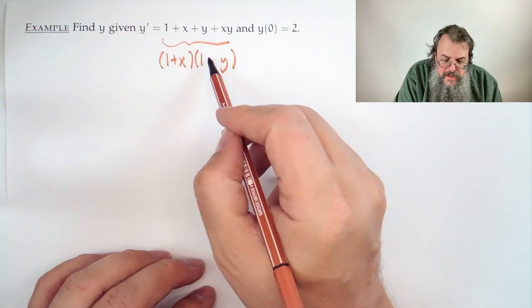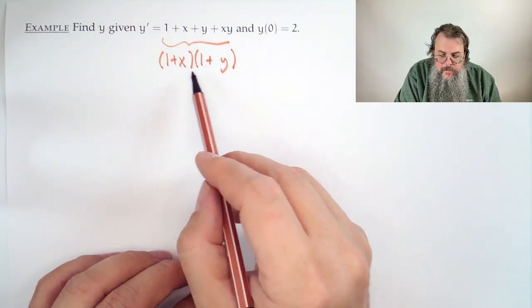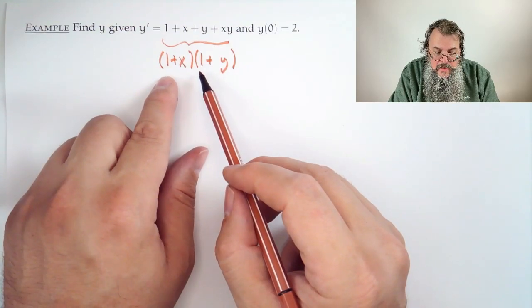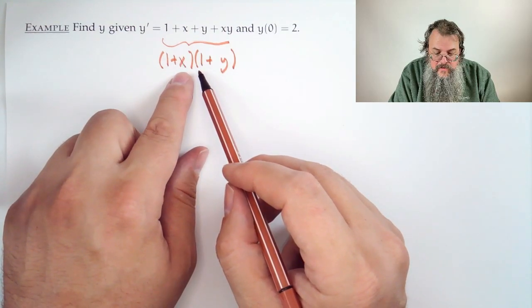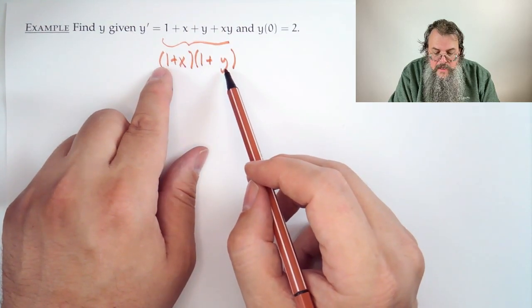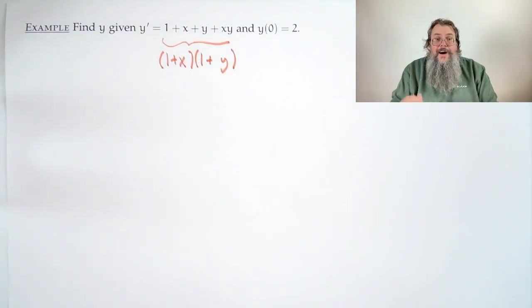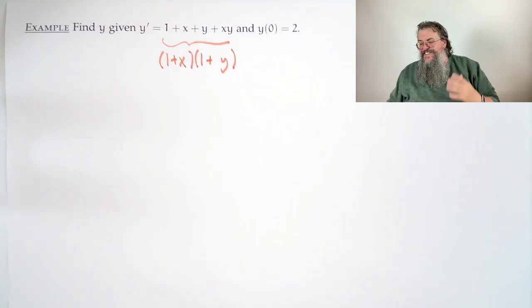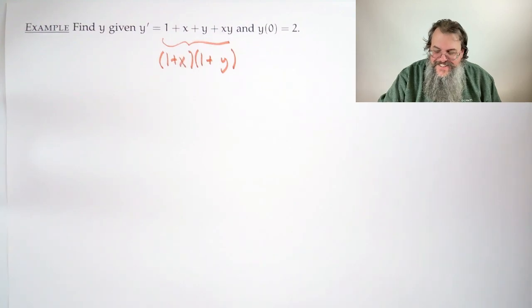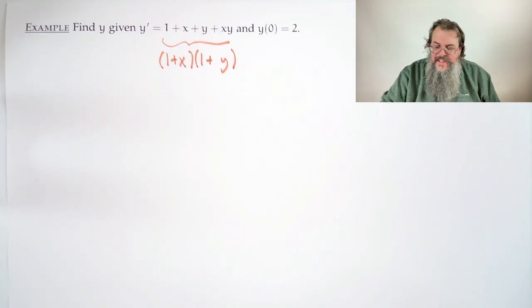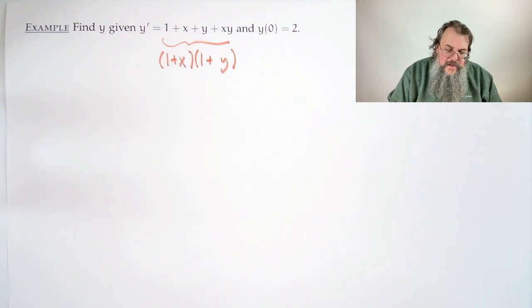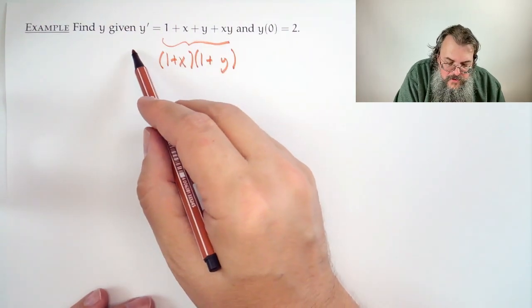And I say, well, what about something like this? (1 plus x)(1 plus y). Well, does it work? You get one, and then there's x, then there's y, and there's xy. Wow. Almost like it was planned to happen. Because it was planned to happen. Yes, of course it was. Well, now that we have that, we say okay, great. And so it's ready for us.